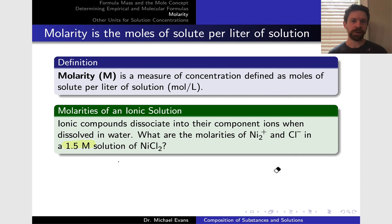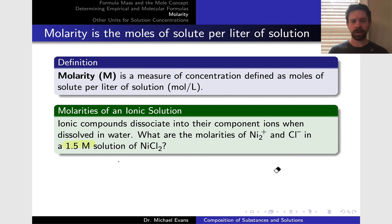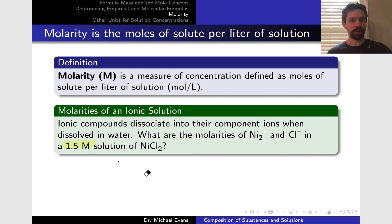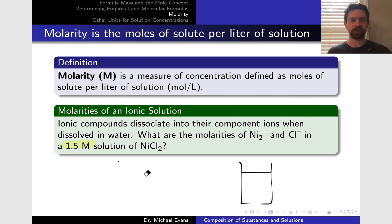To get more familiar with molarity, let's look at this example problem. Ionic compounds dissociate into their component ions when dissolved in water. What are the molarities of Ni²⁺ and Cl⁻ in a 1.5 molar solution of NiCl₂? The key information is that the solution is 1.5 M — capital M being shorthand for moles per liter. Let's start by drawing a picture. This is an aqueous solution — it will look like a liquid — and it's green because the Ni²⁺ cation is green, though that's not essential to the problem.